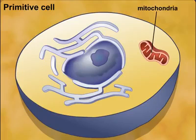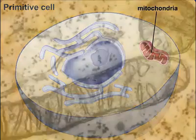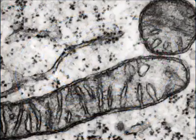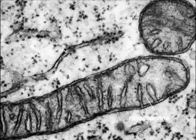According to the theory, energy-producing bacteria may have been engulfed by a larger primitive cell and come to reside within it, eventually evolving into what we now know as mitochondria.